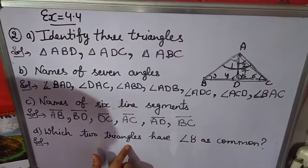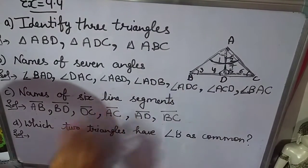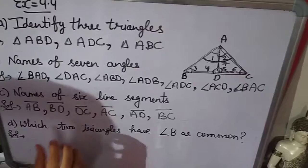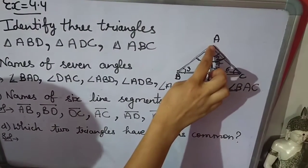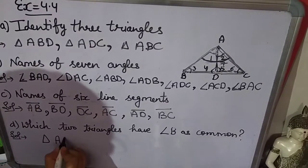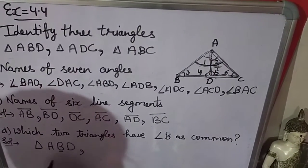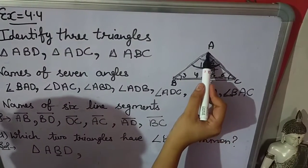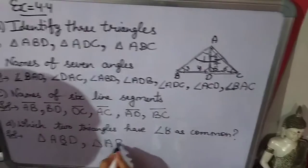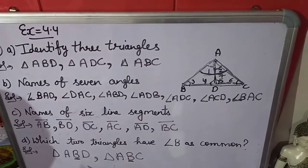Now part D is: which 2 triangles have angle B as common? Angle B is this point. You have to write the 2 triangles that have B as common. The first triangle is ABD — there is the B point, angle B is there. And the next triangle should be ABC — here also angle B is common.